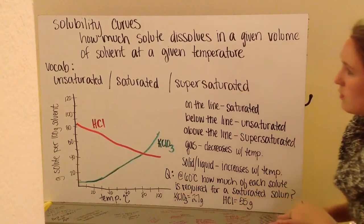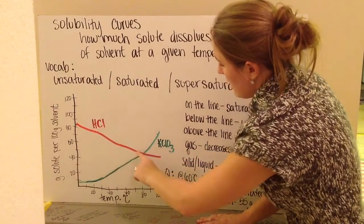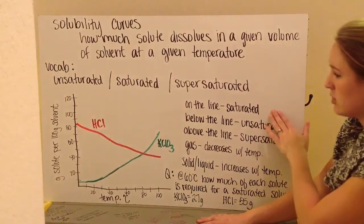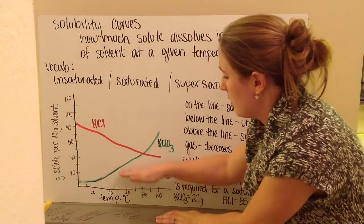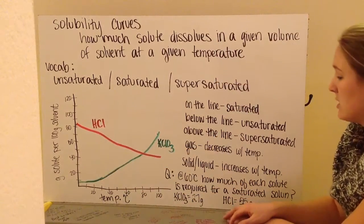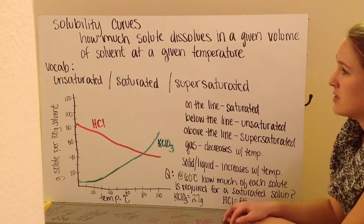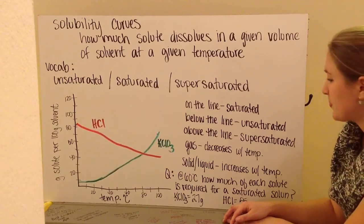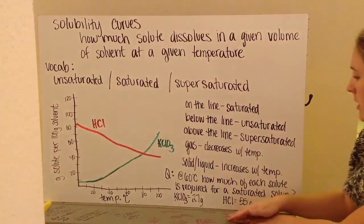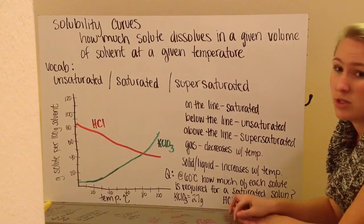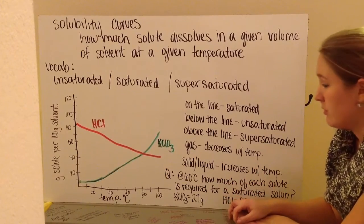To read my solubility curve, if something is on the line, so any number along this line here, any value along the lines, that's going to be a saturated solution. Any number that's below the lines, any point below either of these lines for each individual one, is going to be an unsaturated solution. So, there's not enough particles of solute dissolved in the solvent. It could have more. If we find a point above the line, so above my green line or above my red line, these are considered supersaturated solutions, so there's more than enough solute. In fact, there's so much solute that there's some sitting on the bottom, it won't dissolve.